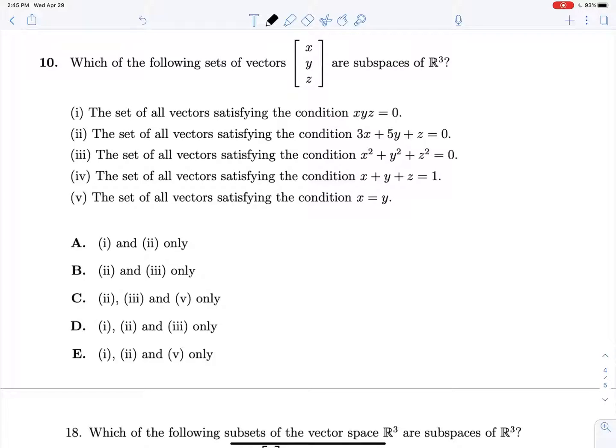So 2 is a plane through the origin. 3 is a point at the origin. What's going on with 1? Let's graph out 1.